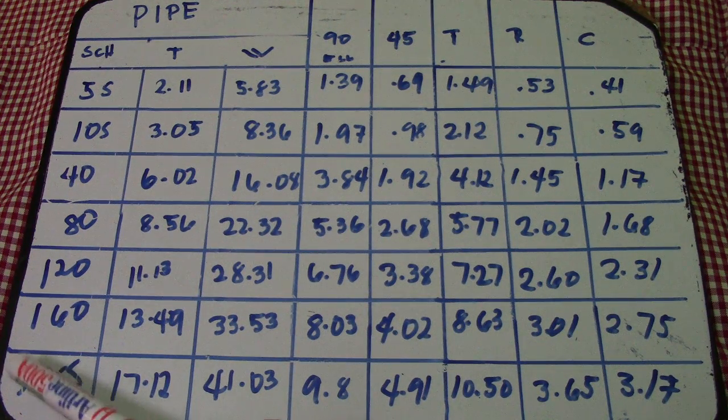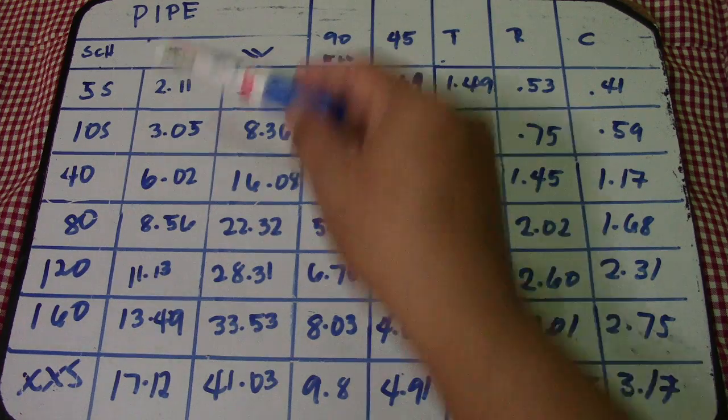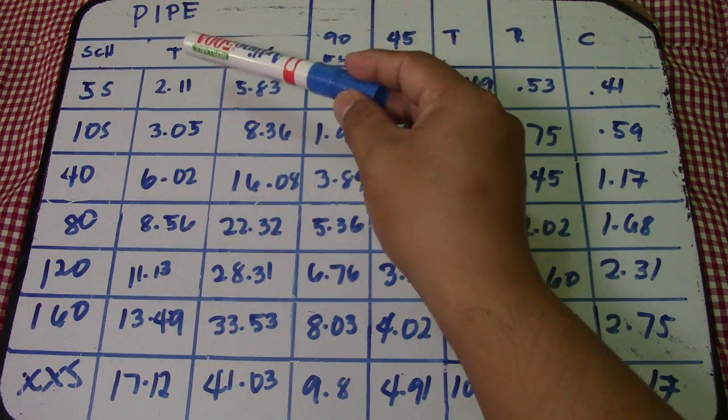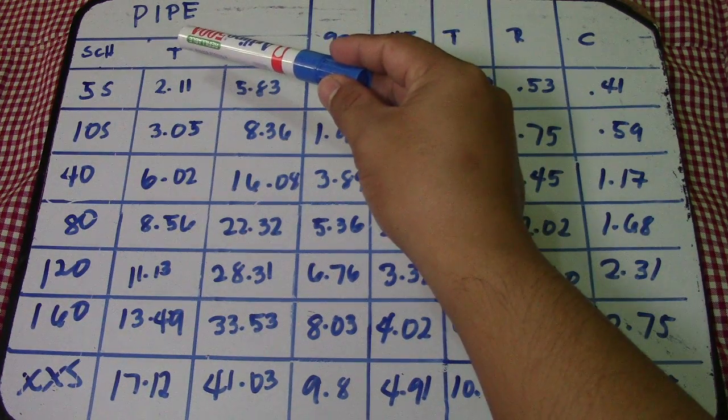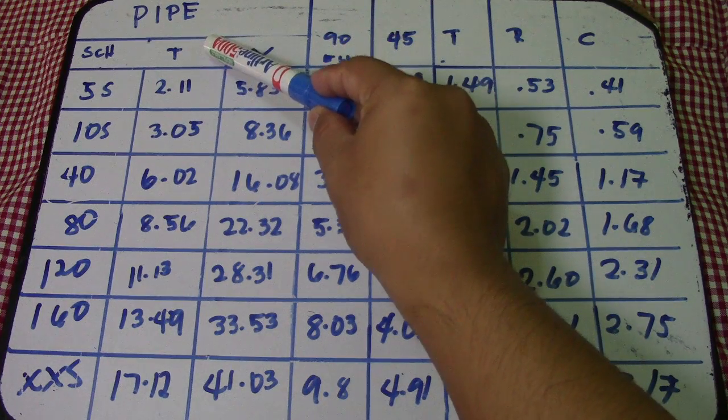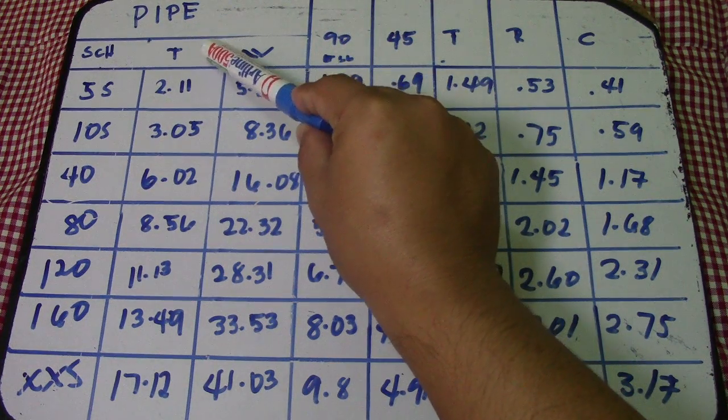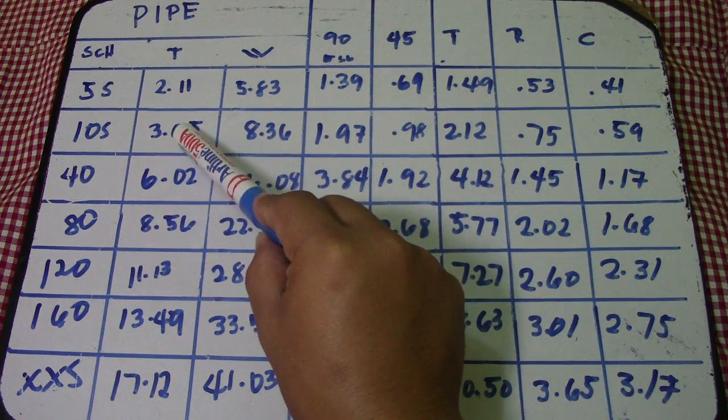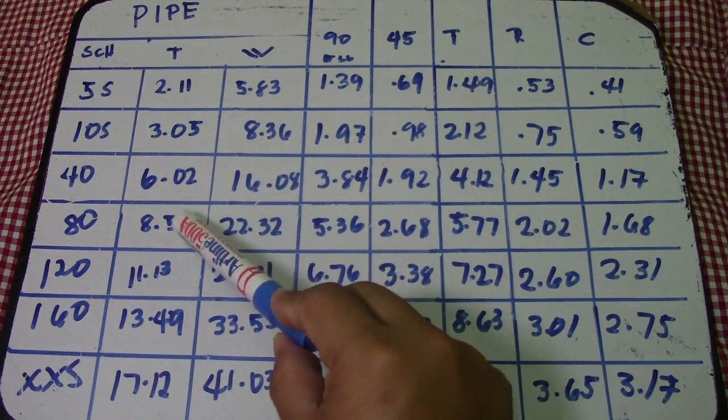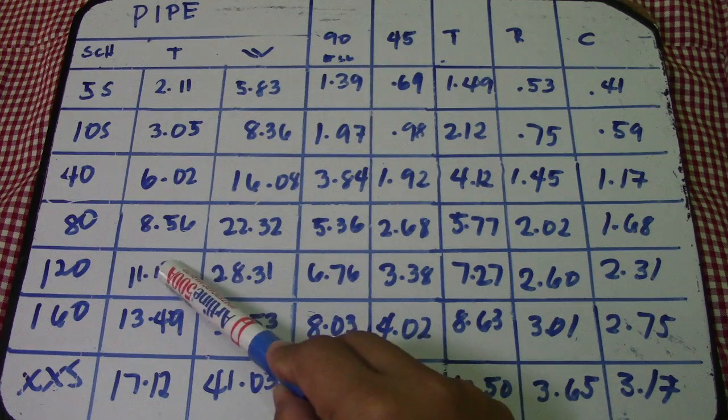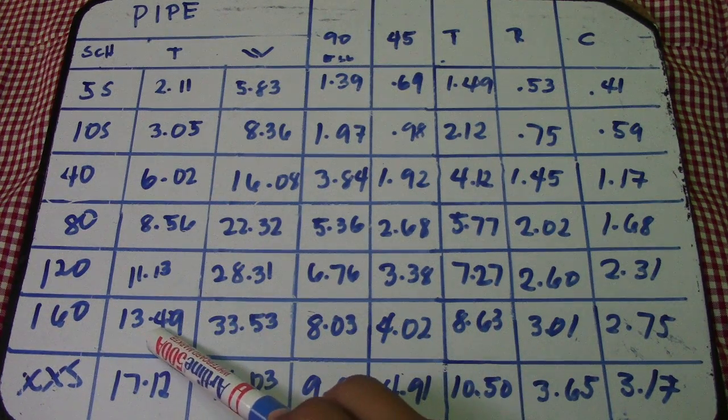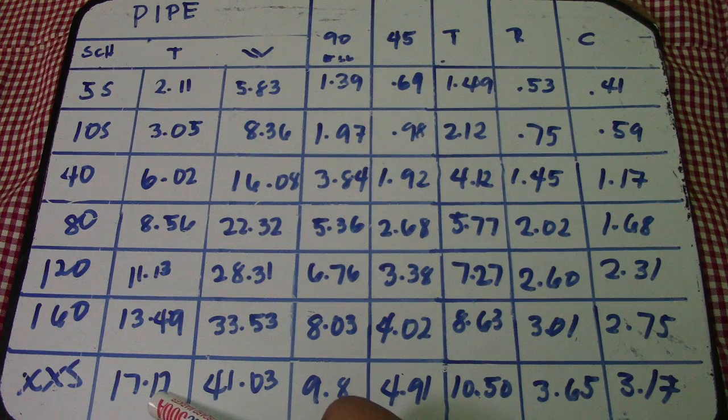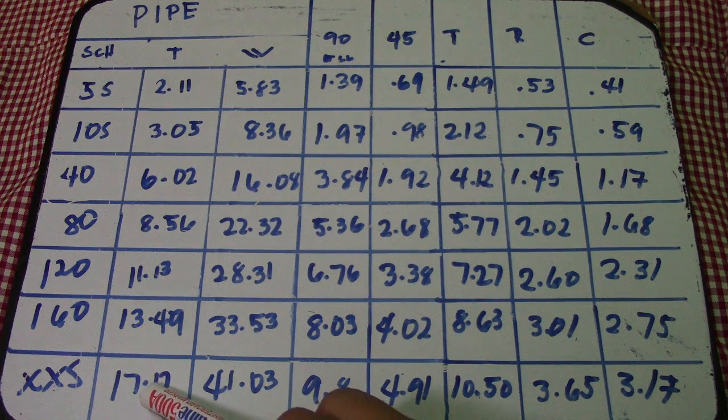Next column is thickness. This thickness is in millimeters: 2.11, 3.05, 6.02, 8.56, 11.13, 13.49, and 17.12. This is for the thickness.